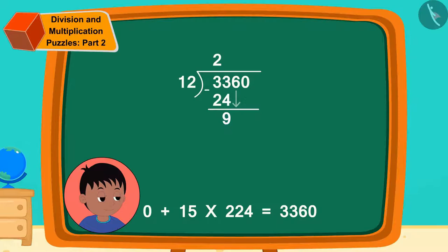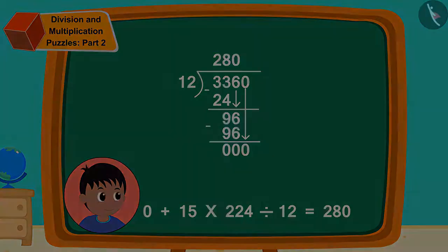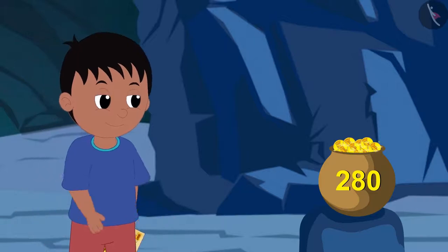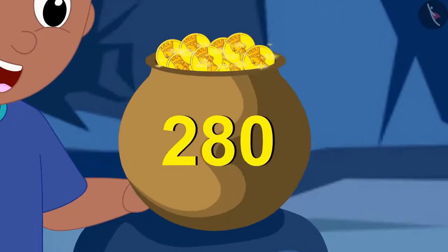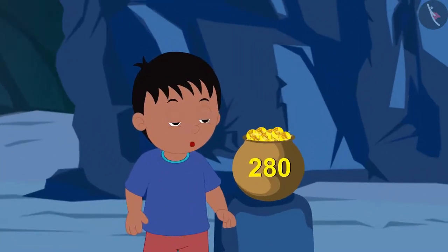He quickly found the answer to the division in this way. 280. Raju reached the end by walking some distance and found gold coins in the treasure. Oh, wow! I got 280 gold coins.